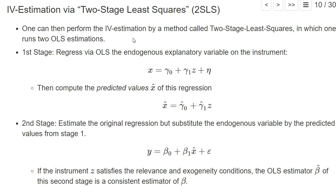If we have a valid instrument, one can perform the IV estimation by a method called two-stage least squares. As the name suggests, one runs two ordinary least squares estimations. I explain it for the case where the original regression has just one explanatory variable that is endogenous and we also have a single instrument.